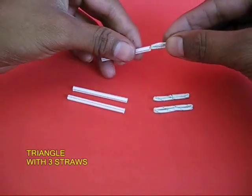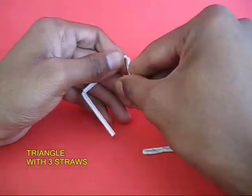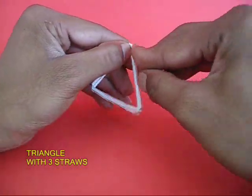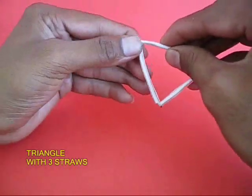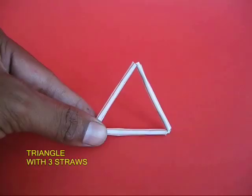This is a very nice way of making joints. With three straws and three joints, make a very nice equilateral triangle. All three angles in this would be equal to 60 degrees.